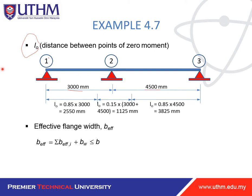L0 for section 1 is 0.8 × 3000 = 2550 mm. For section 2, L0 = 0.15 × (3000 + 4500) = 1125 mm. For section 3, L0 = 0.85 × 4500 = 3825 mm. Now using the effective flange width formula: b_eff equals the sum of b_eff_i plus b_w, which must be less than or equal to the original b.